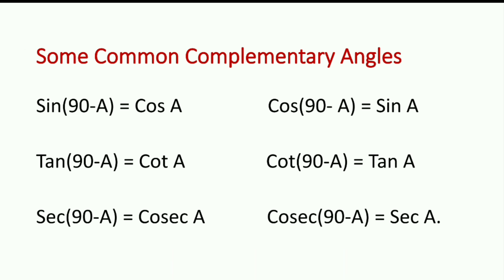Some common complementary angle formulas: sin(90 − A) = cos A, cos(90 − A) = sin A, tan(90 − A) = cot A, cot(90 − A) = tan A, sec(90 − A) = cosec A, and cosec(90 − A) = sec A. These are all the complementary angle relationships.